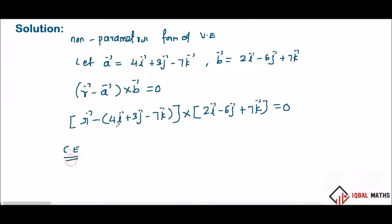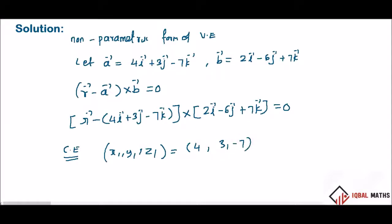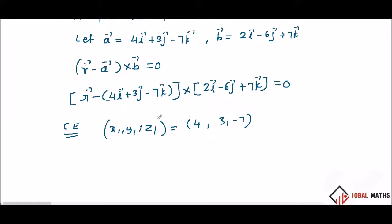Cartesian equation. The formula uses x1, y1, z1 — the coefficients of i, j, k from the point vector, which are 4, 3, minus 7. Then b1, b2, b3 from the parallel vector, which are 2, minus 6, and 7.